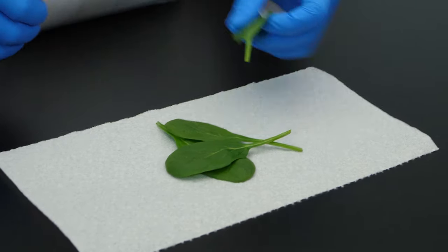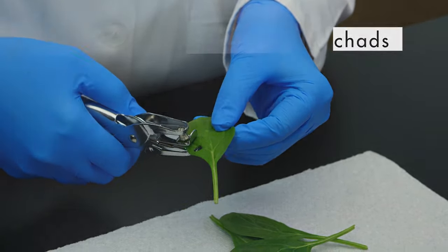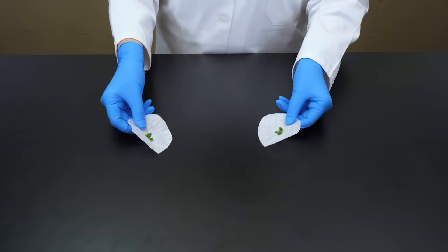With a hole punch, we punch tiny round pieces, called chads, from the leaves. We need 20 chads for this experiment.